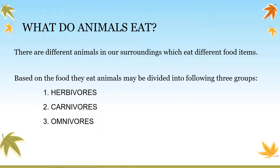There are different animals in our surroundings which eat different food. Based on the food they eat, animals are divided into three groups: herbivores, carnivores, and omnivores.